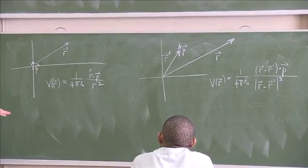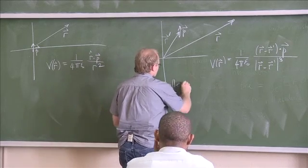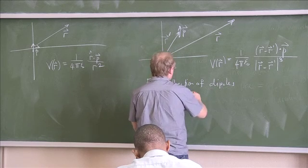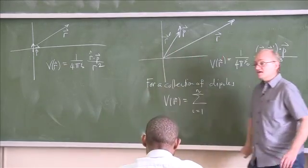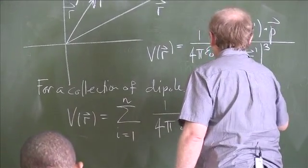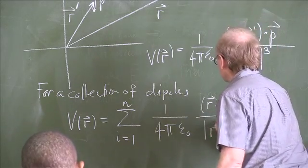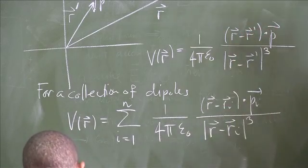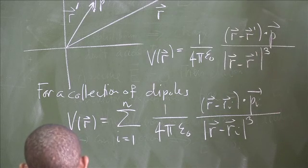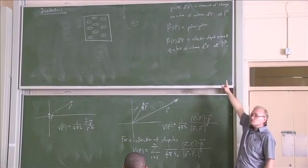If we have a collection of dipoles, we can use superposition principle. So for a collection of dipoles, V of R will be equal to a sum from i is equal to 1 to n, the number of dipoles, we will have 1 over 4 pi epsilon 0, we will have R minus R i dotted into the dipole moment of the i-th particle divided by the mod of R minus R i cubed. Now, I want you guys to write a formula for the case that we've got a continuous distribution of dipoles in terms of the polarization. So try to write a formula now for the case that we have a continuous distribution of dipoles described by some polarization.